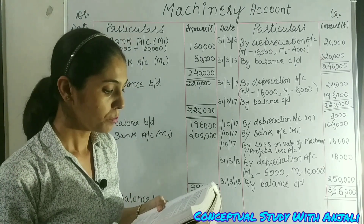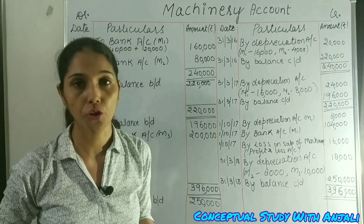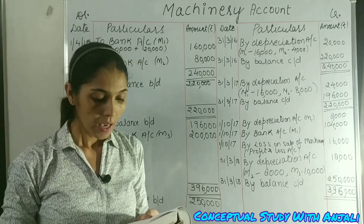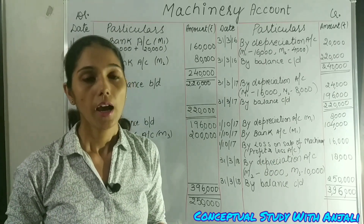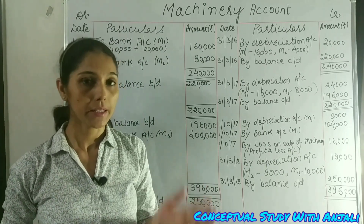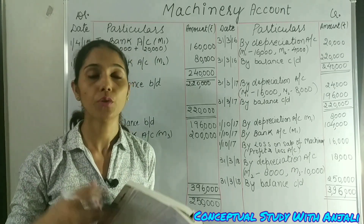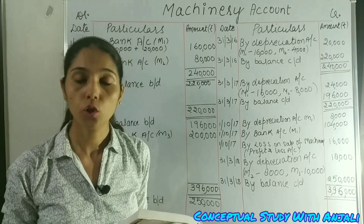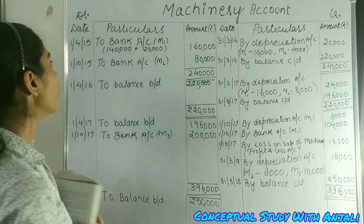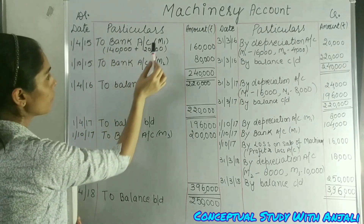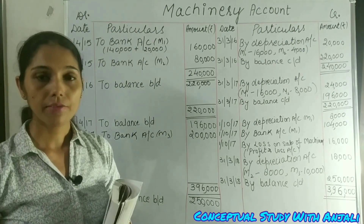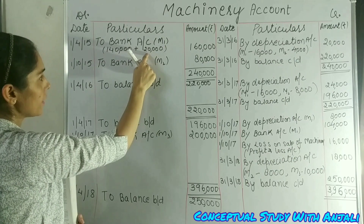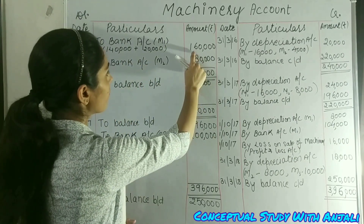Let's see the question. A firm purchased a second-hand machine on 1st April 2015 and paid Rs. 1,40,000 for it, and spent Rs. 20,000 on its overhauling and installation. Any charges to bring an asset to working condition — like freight or installation — are added to the original cost. So we write on 1st April 2015, bank account M1. The total cost of our machinery is 1,40,000 plus 20,000 equals Rs. 1,60,000.